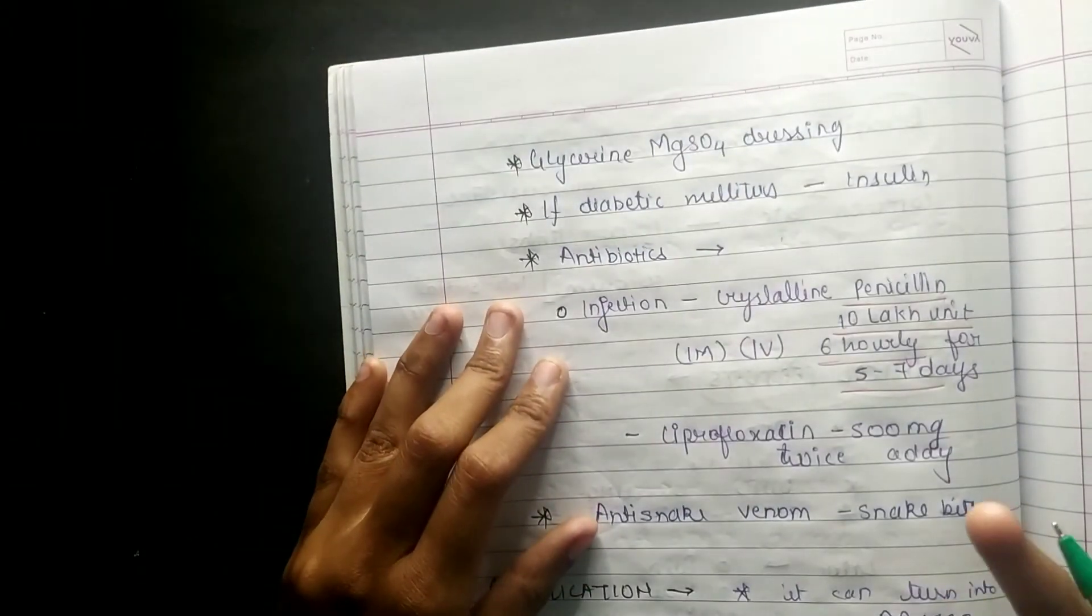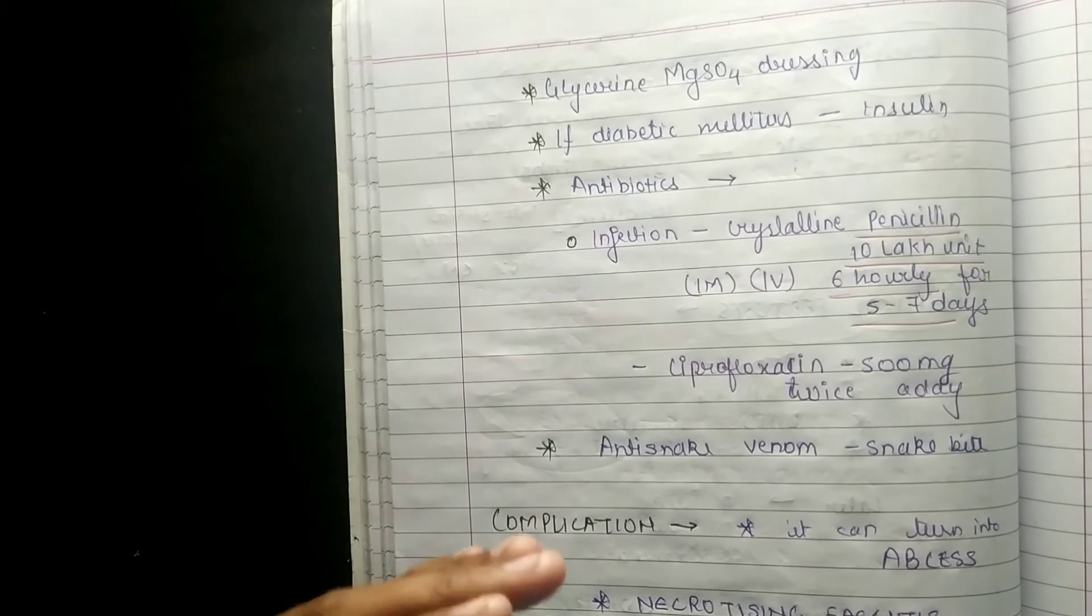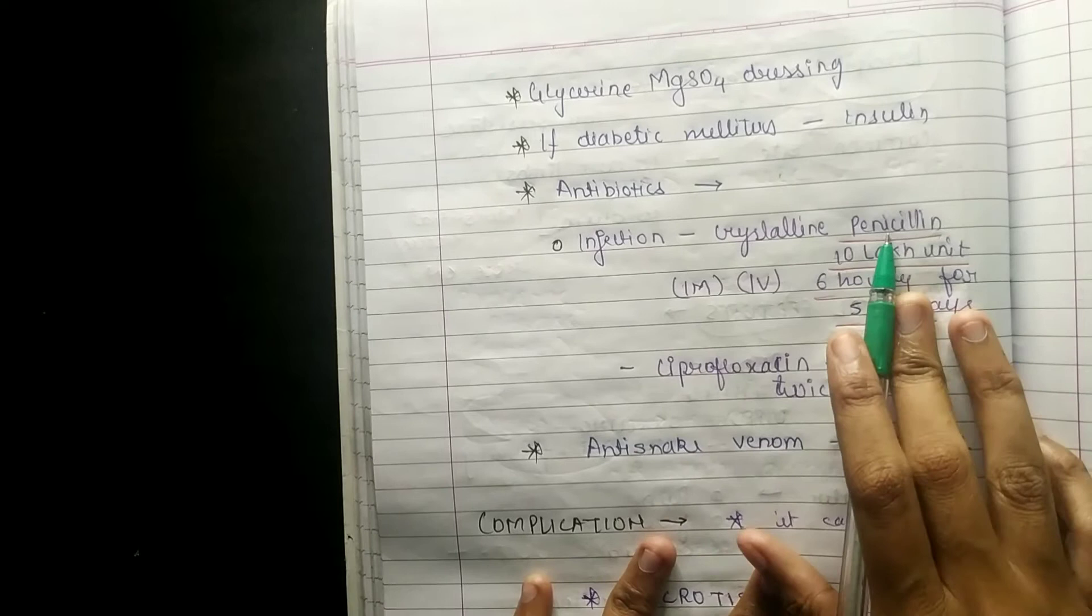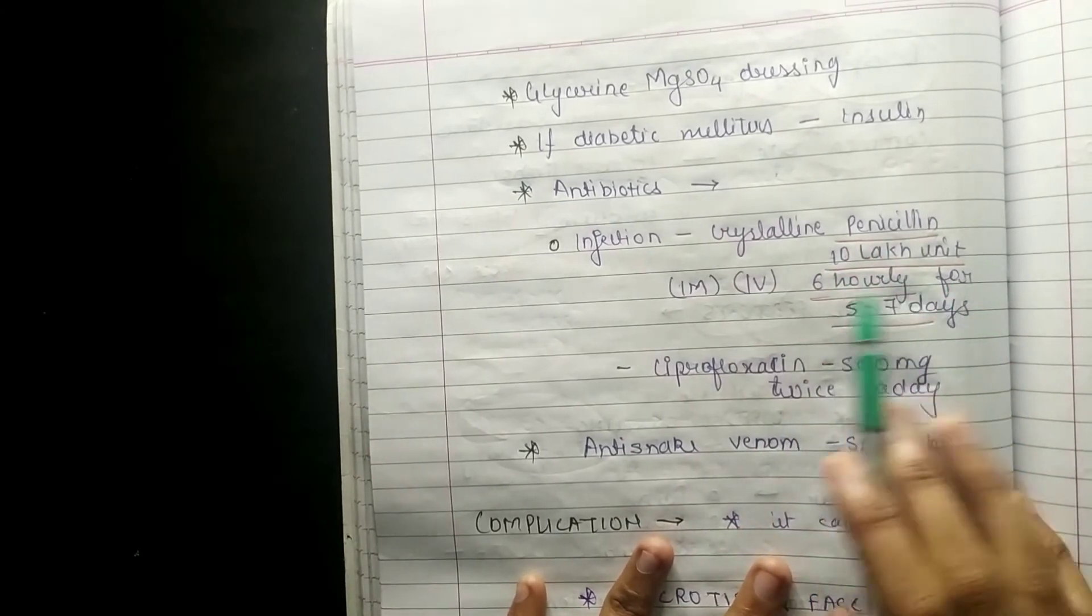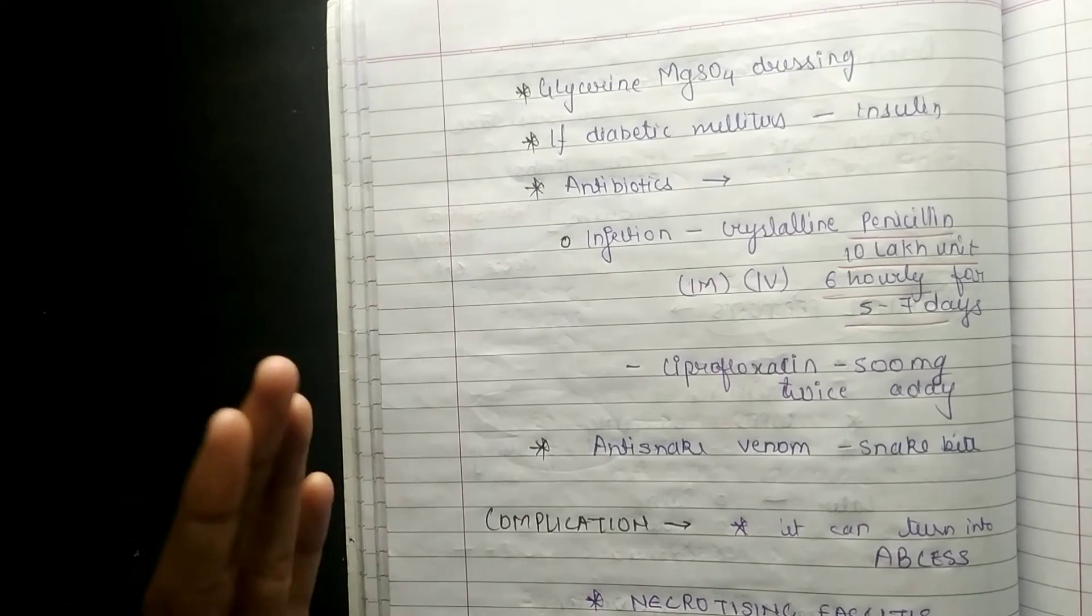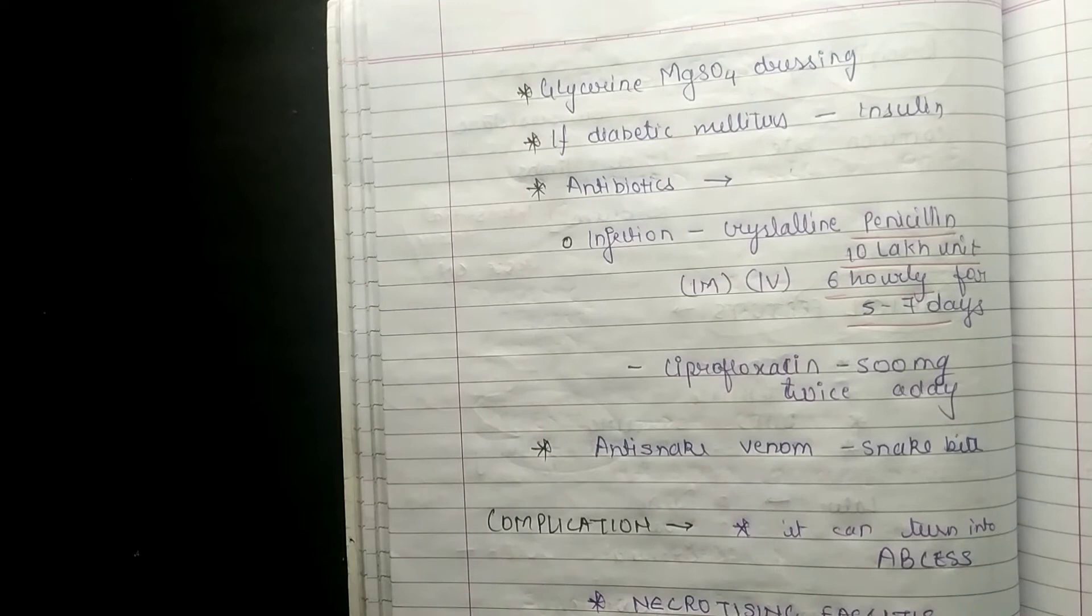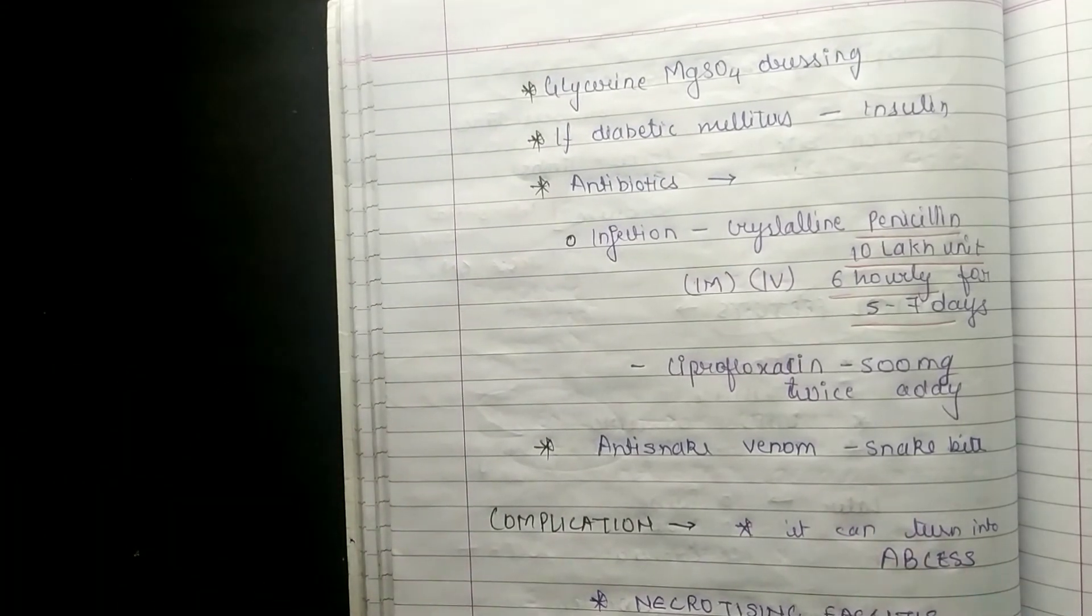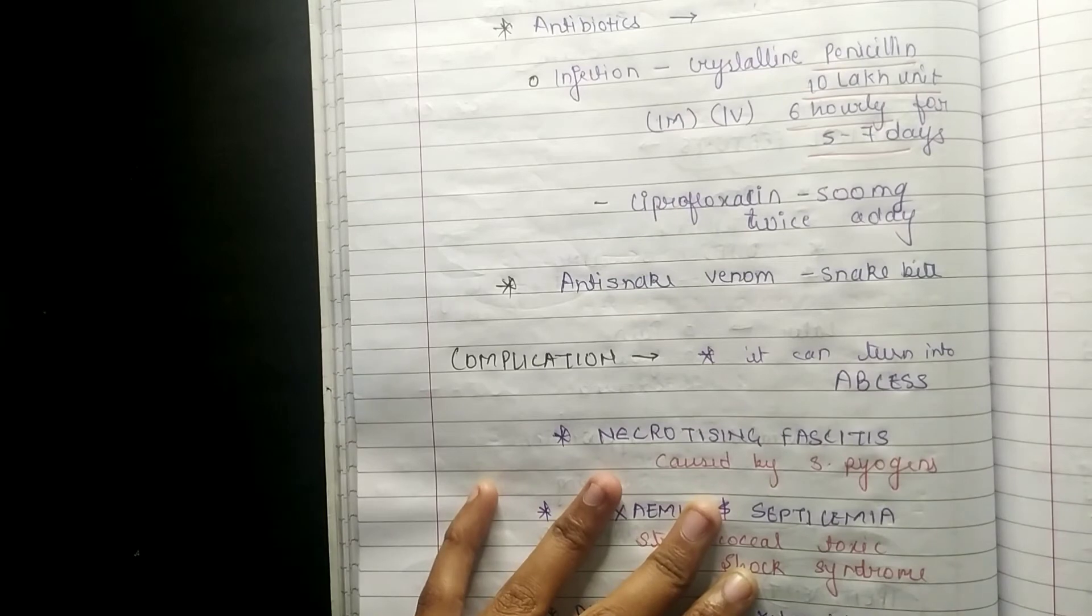We can use antibiotics. In injection there are two things: penicillin and ciprofloxacin. Crystalline penicillin will be given to the patient, 10 lakh unit intramuscular or IV six hourly for five to seven days. Basically we have to give crystalline penicillin injection to the patient every six hours for five to seven days.